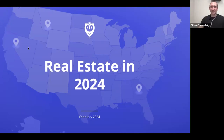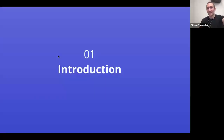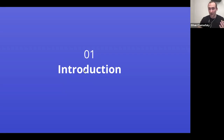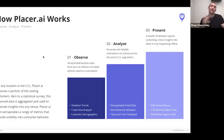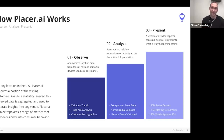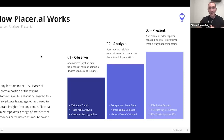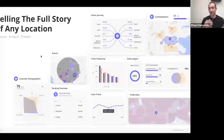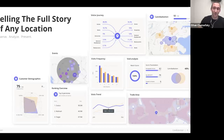Thank you so much, Ron, and thank you everyone for being here. Before we get started, we wanted to give you a quick introduction to the data informing our perspectives. Placer is a location data company — people vote with their feet, and we show you how they vote across the United States every single day. We observe a panel of tens of millions of devices. It's all aggregate de-identified data, so we are GDPR and CCPA compliant. We analyze that data with machine learning and AI algorithms to make estimations on visits to retail locations across the country. We present that data in reports covering demographics, trade areas, visit trends, visit frequency, void analysis, and more.